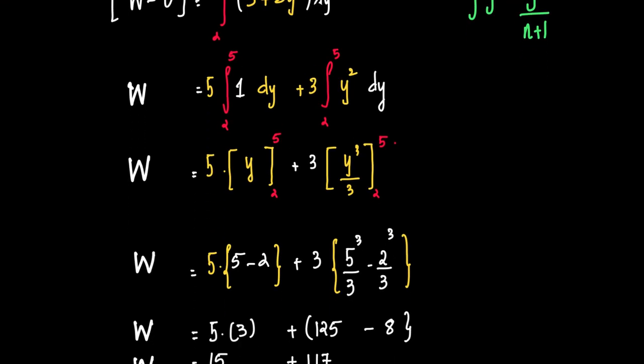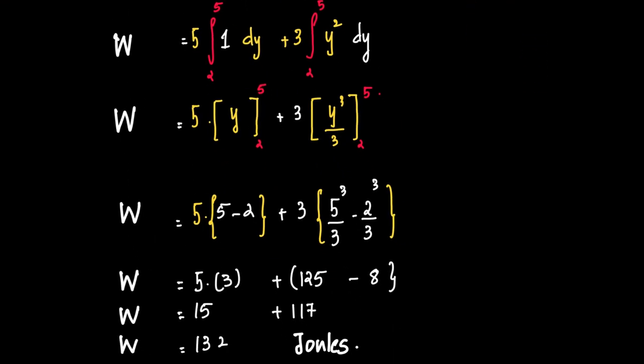So now applying the limits, y varying from 5 to 2 is 5 minus 2, 5 minus 2, 3 into y cubed by 3 varying from 2 to 5 is 5 cubed by 3 minus 2 cubed by 3.